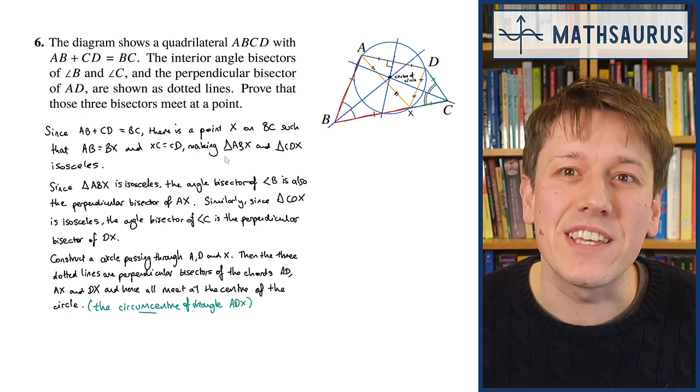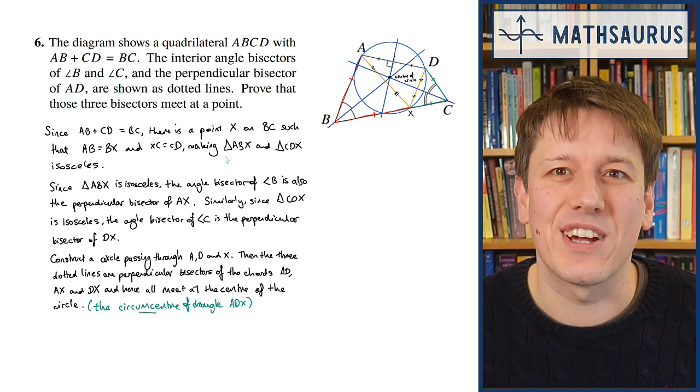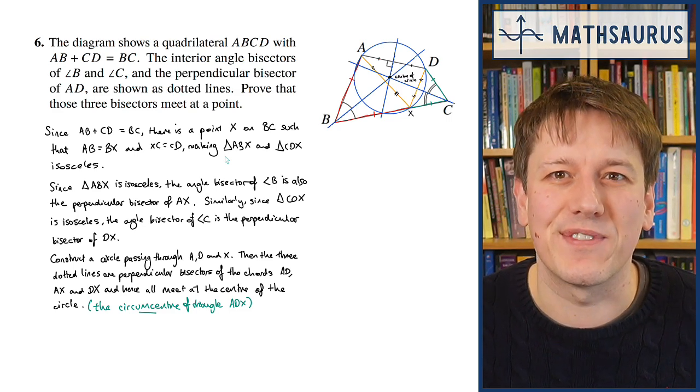If you enjoyed that problem, here's another Olympiad geometry problem that also involves putting a circle on the diagram in a clever way. I wonder if you can find it.